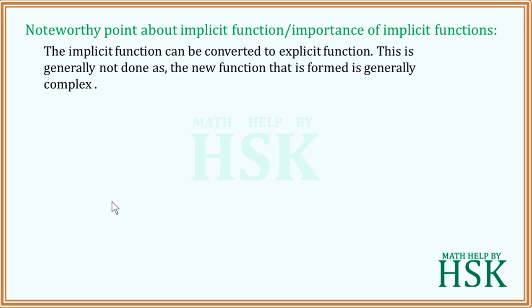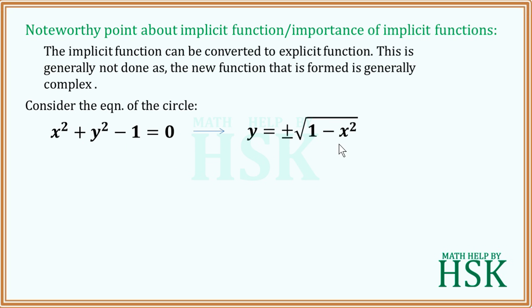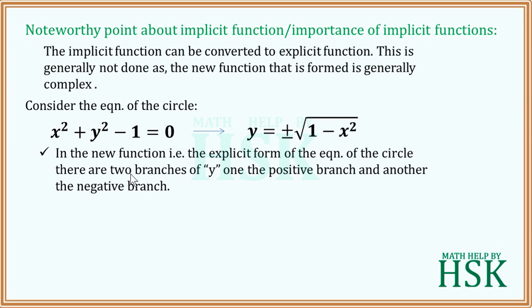To illustrate this, consider the equation of a circle: x² + y² − 1 = 0. If we try to convert it into explicit form, we get y = ±√(1 − x²). Taking the square root gives two branches — a positive branch when we take the plus sign, and a negative branch when we take the minus sign.